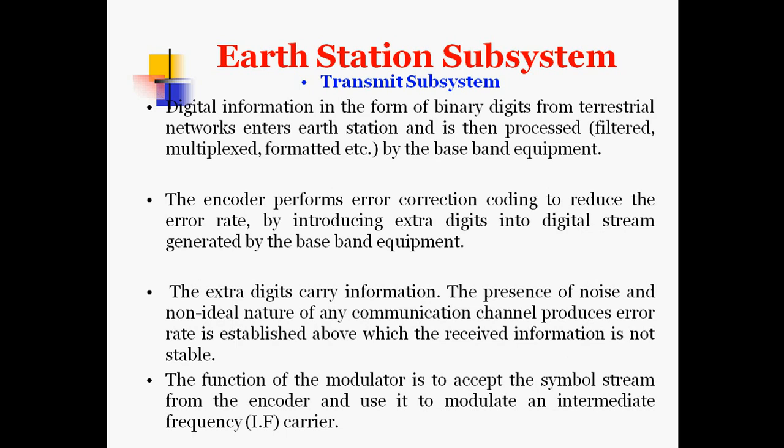In the transmit subsystem, digital information in the form of binary digits from the terrestrial network enters the earth station and is processed — this may include filtering, multiplexing, or formatting by the baseband equipment. The encoder performs error correction coding to reduce the error rate by introducing extra digits into the digital stream. These extra digits carry information, since noise and the non-ideal nature of any communication channel produce errors above a certain rate, making received information unstable.